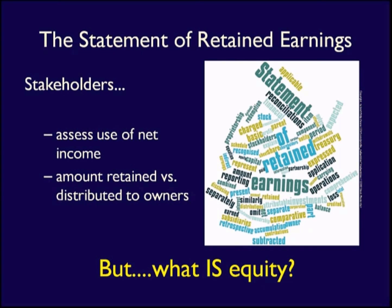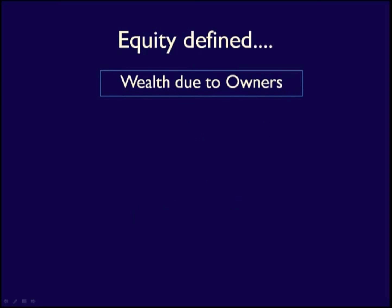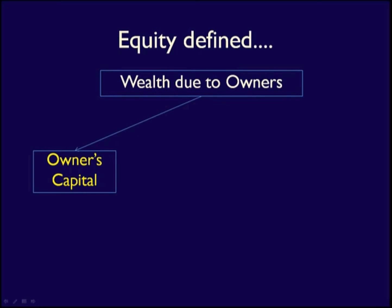In order to understand the Statement of Retained Earnings, we must first understand what makes up the element equity. Equity is a difficult concept to grasp, so we're going to keep it simple right now. Equity is equal to wealth that is due to the owners of the business, and it is made up of two items.